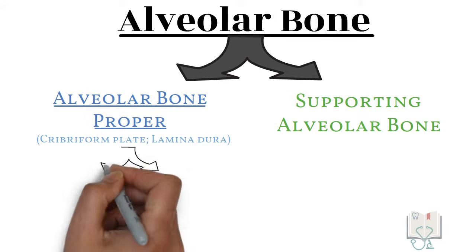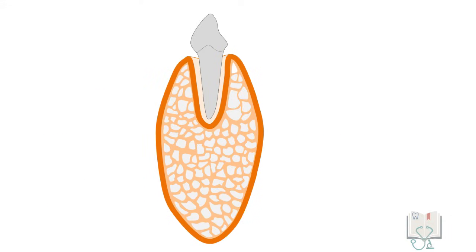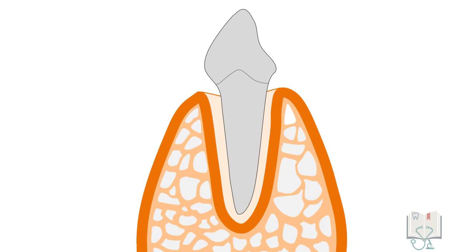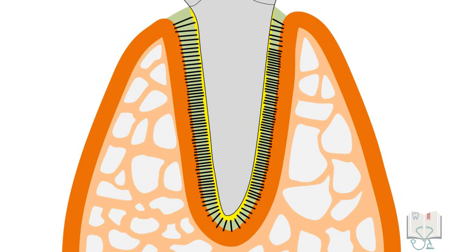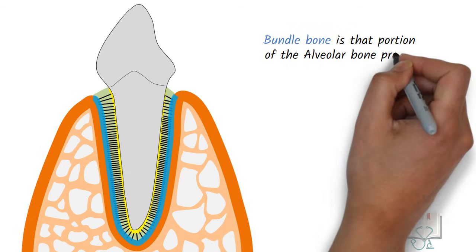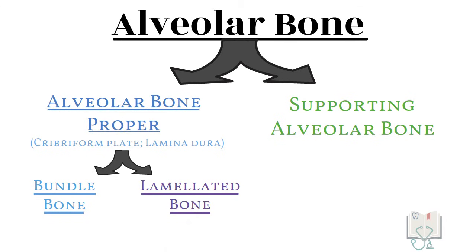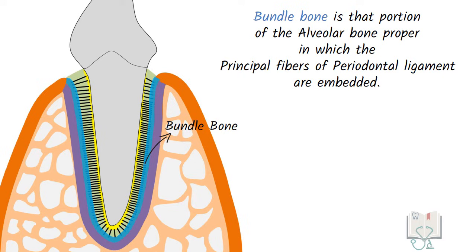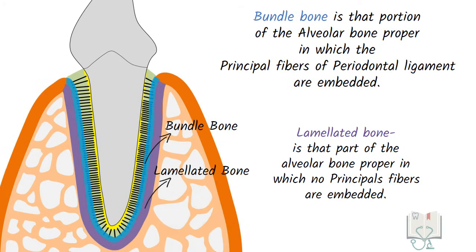Histologically, alveolar bone proper can be further divided into bundle bone and lamellated bone. Bundle bone: alveolar bone proper forms the tooth socket and provides anchorage to the root. The root of the tooth is lined by cementum, and between the cementum and the tooth socket is the periodontal ligament, which contains the principal fibers. Principal fibers on one end are embedded in the cementum and on the other end in the alveolar bone proper. So bundle bone is that portion of alveolar bone proper in which the principal fibers of the periodontal ligament are embedded, or bundles of Sharpey's fibers are present. Lamellated bone is that part of the alveolar bone proper which is formed of compact or lamellar bone and has no principal fibers or bundles of Sharpey's fibers embedded in it.